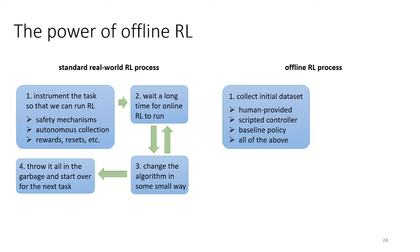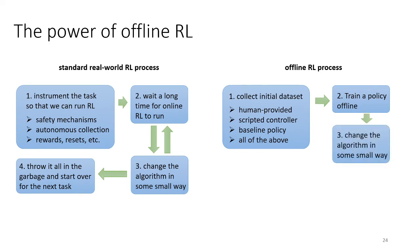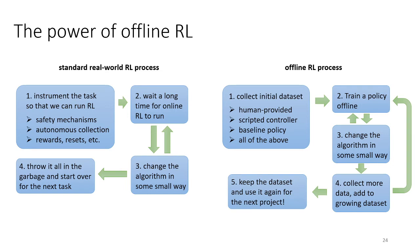With offline RL, you collect an initial dataset from a wide range of sources — human data, scripted controllers, a baseline policy, or a combination. You might still need to design a reward function, but you could also have humans label the reward, because you only need the reward on your training data. Then you train your policy with offline RL. If you change the algorithm, you don't need to recollect your data, making this process much more lightweight. You might choose to collect more data and add it to a growing dataset — anything you collect, you append and aggregate and keep reusing. You will periodically need to run your policy online mostly to see how well it's doing, but that's a lot less onerous than doing training online. And for future projects in a similar domain, you can keep your dataset around and reuse it.